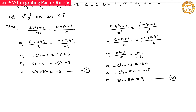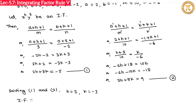Solving equations 1 and 2 simultaneously: 2h + 3k = −5 and 3h + 5k = 9. You can use any standard method. The solution gives h = 2 and k = −3. Therefore the integrating factor is x^h y^k = x² y^(−3).